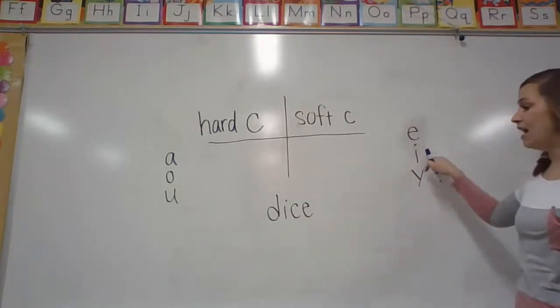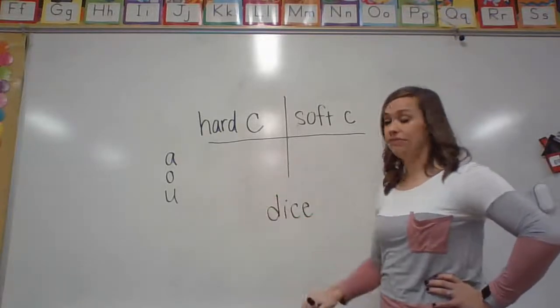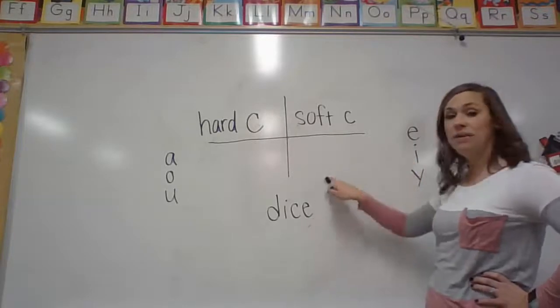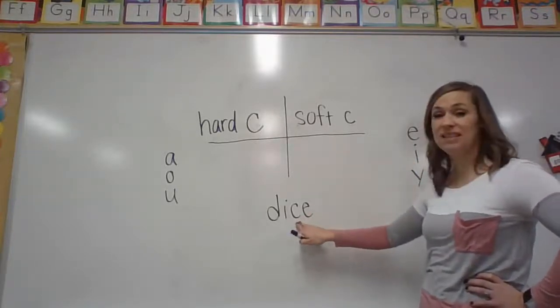Does it have an E, I, or Y? Or does it have an A, O, or U? It has an E, which is over here. So that means I'm going to have the soft C sound. So this C is going to say S.